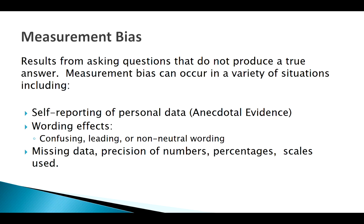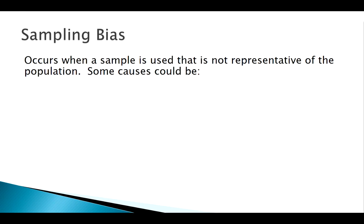We don't want measurement bias — we've got to make a good data collection tool. We also have to get that tool to the right people. Sampling bias is simply not getting our survey to the correct people.